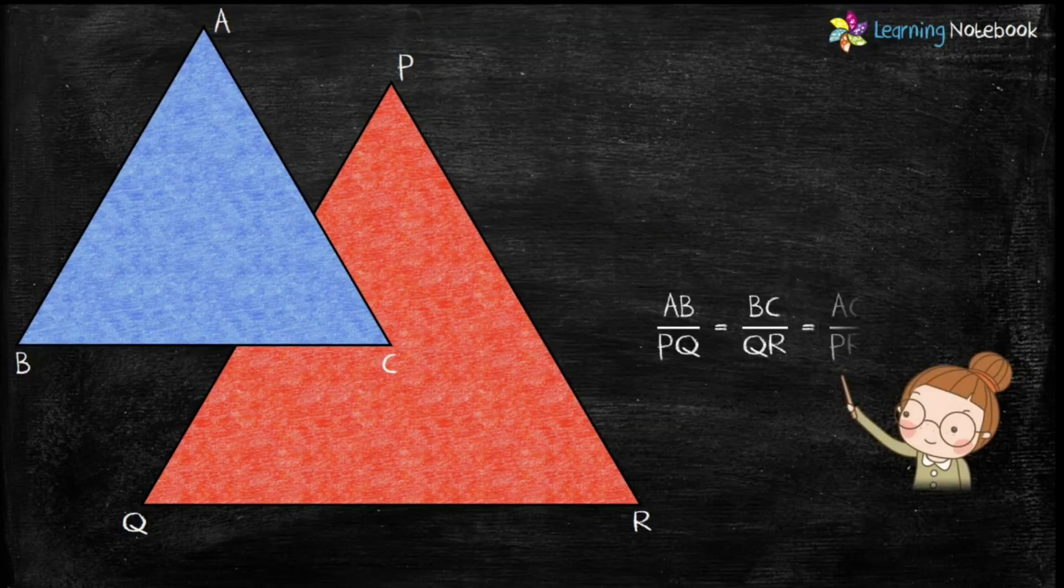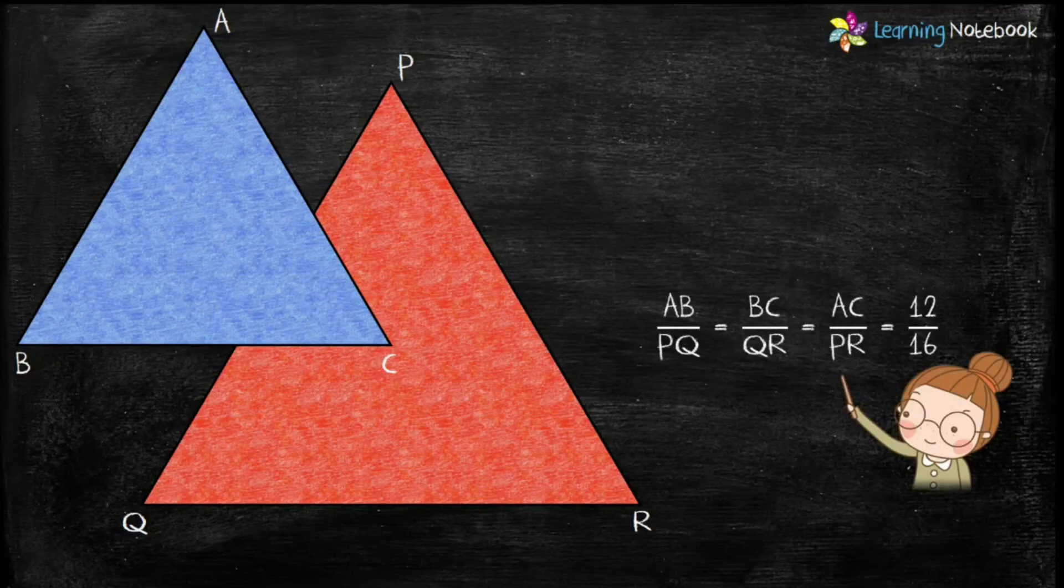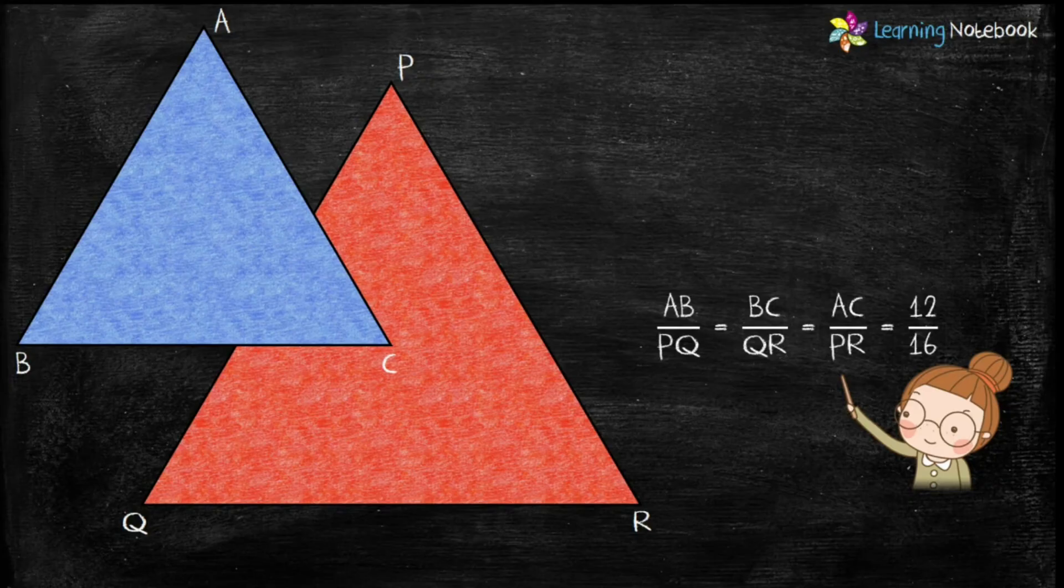Therefore, ratio of their corresponding sides equals to AB by PQ equals to BC by QR equals to AC by PR equals to 12 by 16.